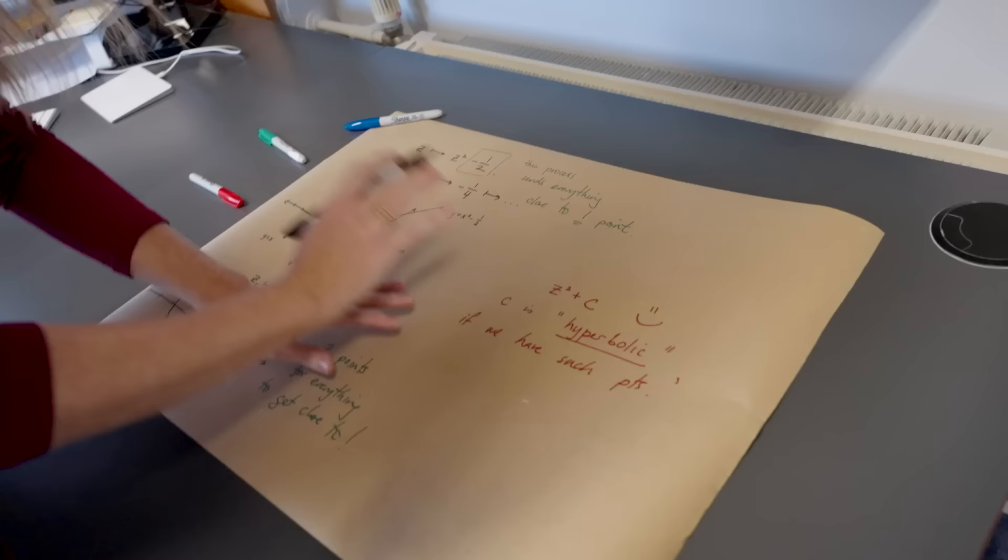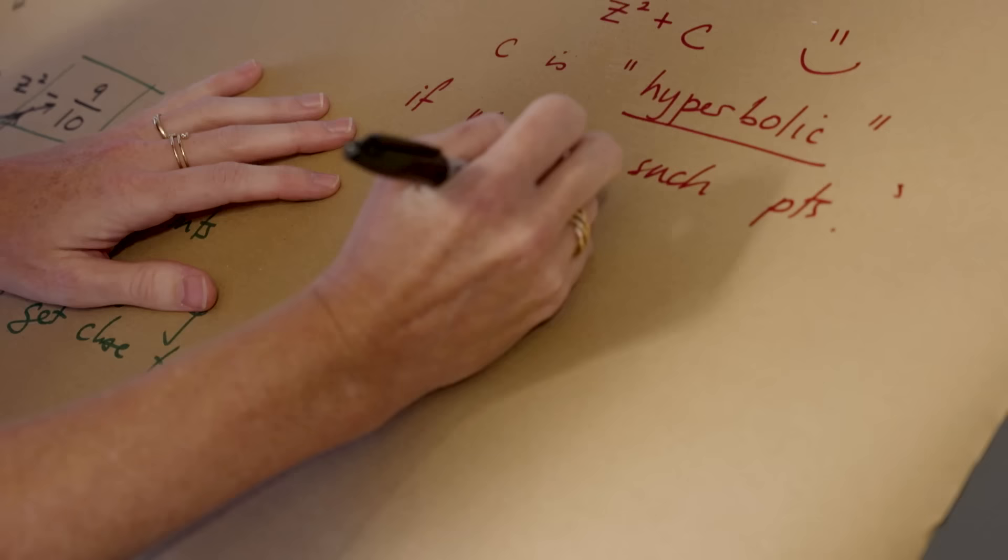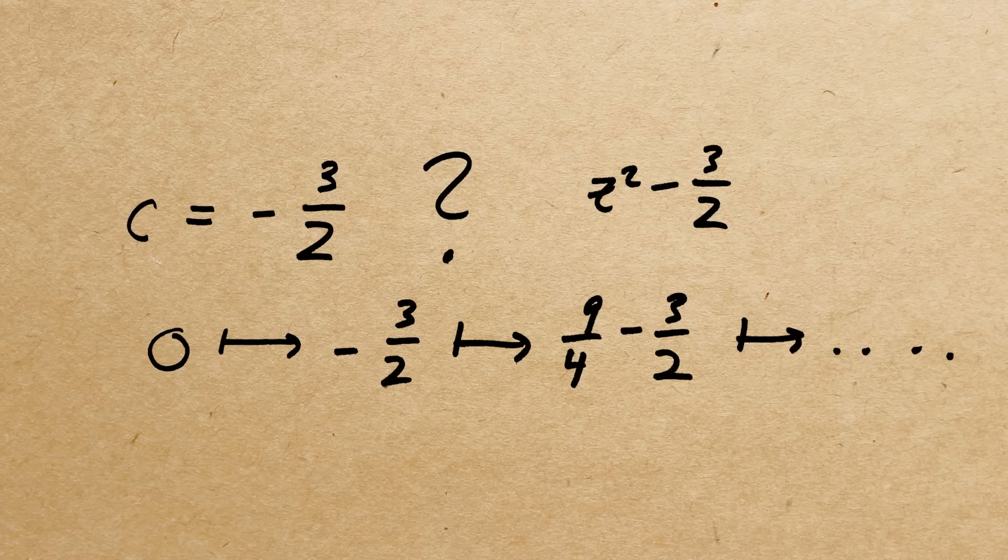The strange thing is we truly don't know how to do this. So for example, something that we do not know at all is whether or not c equals minus three halves is hyperbolic. So you put in zero, you square it, and you subtract three halves, and then you square that, and you subtract three halves. I don't do arithmetic in front of people. You just keep going this way, and we have no idea whether or not this picture has that feature that there's finitely many points that you end up with at the end of the day, that you get closer and closer to.